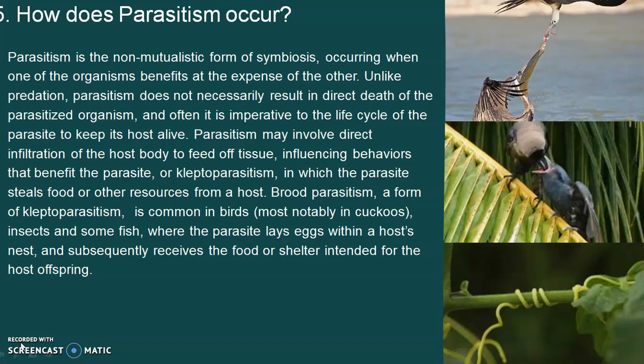Another type of parasitism is kleptoparasitism. For example, the frigate — a sea bird, a large bird — doesn't swim or dive, but it steals food from pelicans who have caught fish. This is kleptoparasitism, where the parasite steals food or other resources from a host.